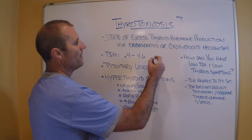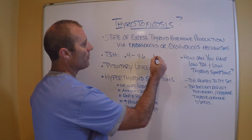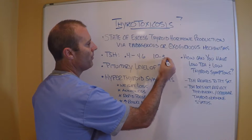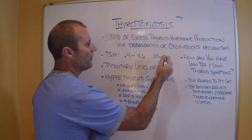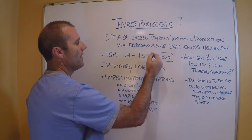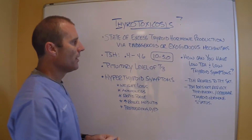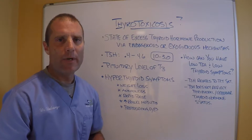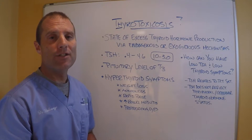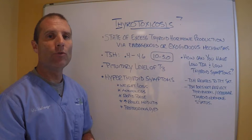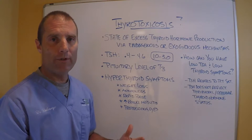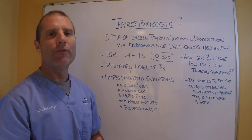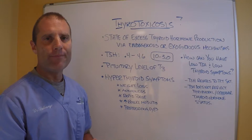Functionally, we like a range that's probably closer to 1.0 to 3.0 for TSH. But as you know, if you've watched any of these videos, I never look at TSH by itself. You have to look at TSH in relationship to a full thyroid panel — not just a TSH and T4, but a full thyroid panel.